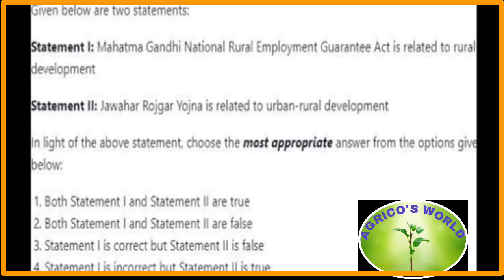Given below are two statements. Statement 1: the Mahatma Gandhi National Rural Employment Guarantee Act is related to rural development — statement 1 is true. Statement 2: Jawahar Rozgar Yojana is related to urban-rural development — no, statement 2 is false. So from the given options we can choose the third option: statement 1 is correct but statement 2 is false.